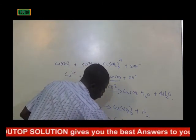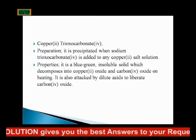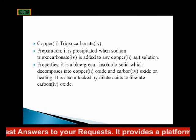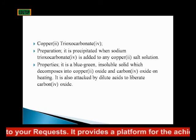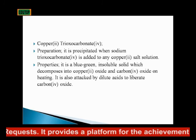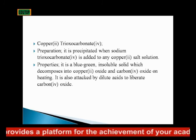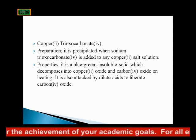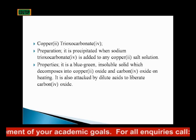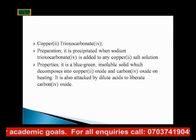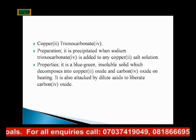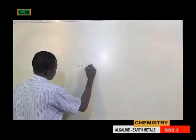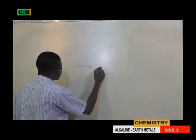When copper(II) trioxonitrate(V) is heated, it decomposes into copper(II) oxide plus NO2 (nitrogen dioxide) plus oxygen. Copper(II) carbonate is a blue-green insoluble solid which decomposes into copper(II) oxide and carbon dioxide on heating. It is also attacked by acids.